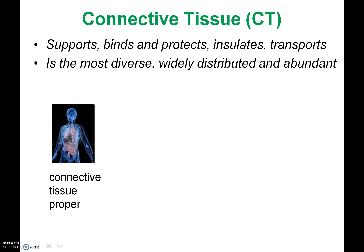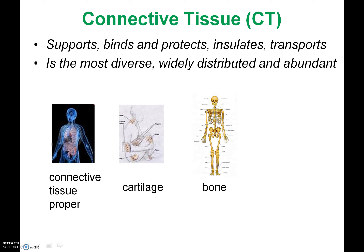So let me tell you about the four types of connective tissues. One is a category called connective tissue proper. The second is cartilage — for instance, cartilage in your nose, in your ear, in your knee. Third is actually bone, so your entire skeletal system is connective tissue. And finally, blood is also a connective tissue, even though you might not think so.